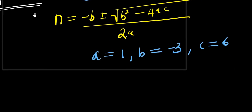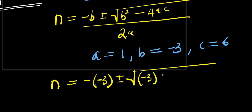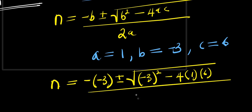Let's insert everything: n = (-(-3) ± √((-3)² - 4·1·6)) / (2·1).